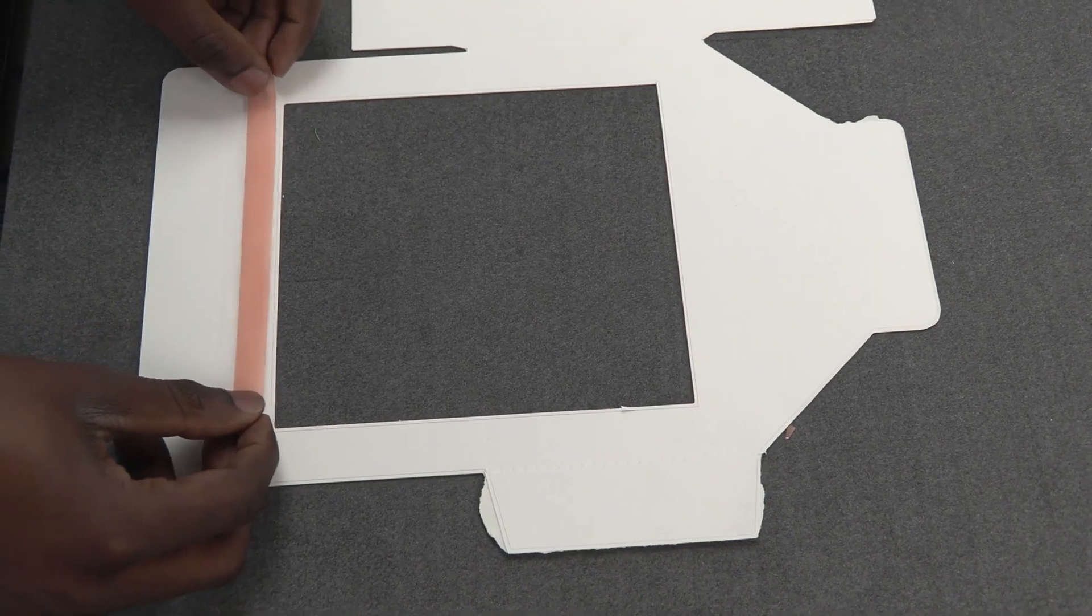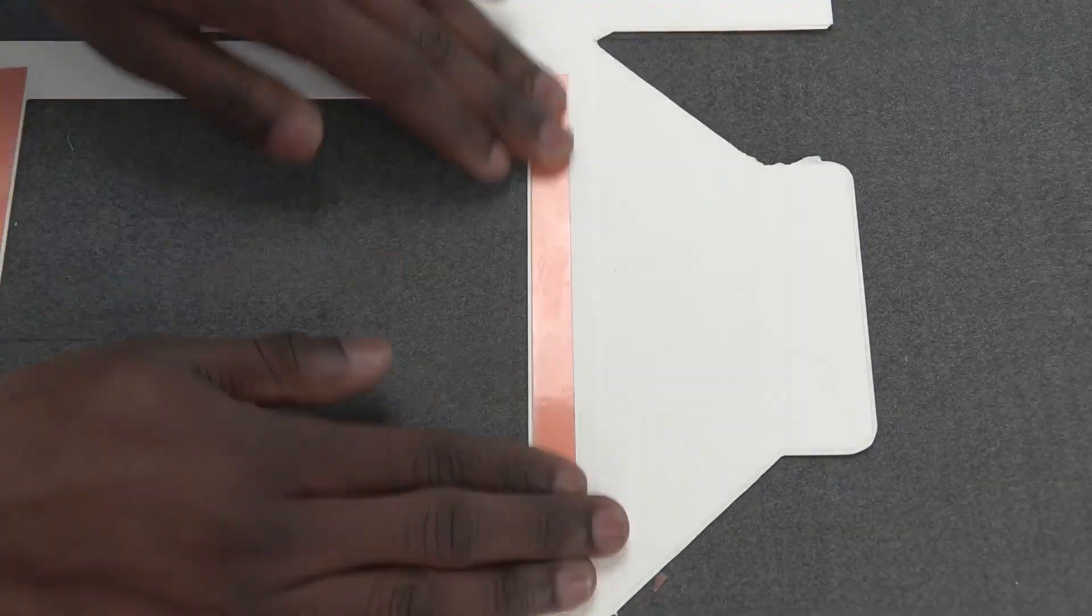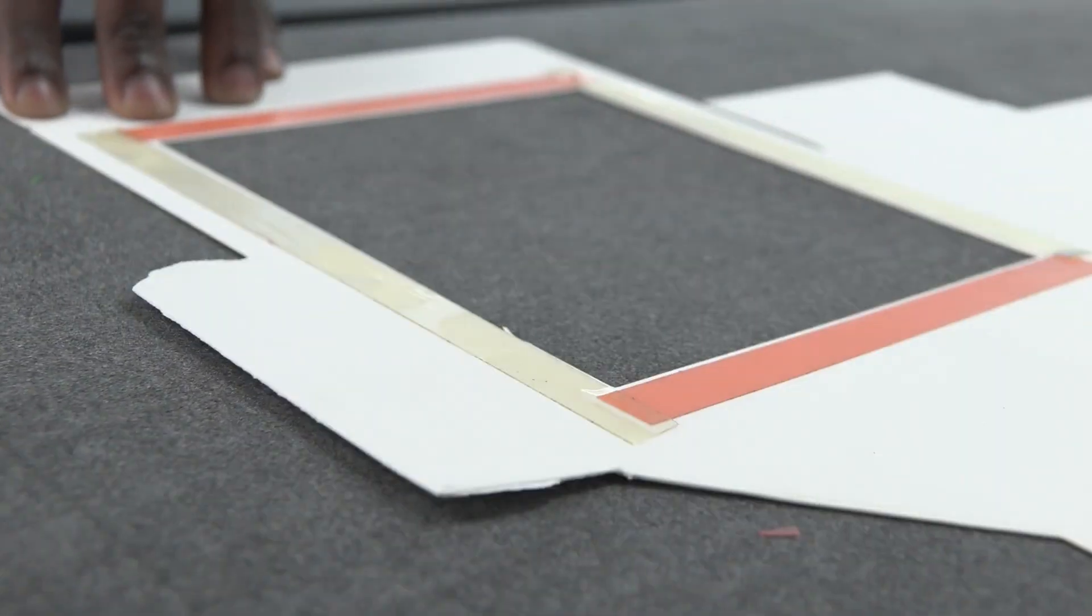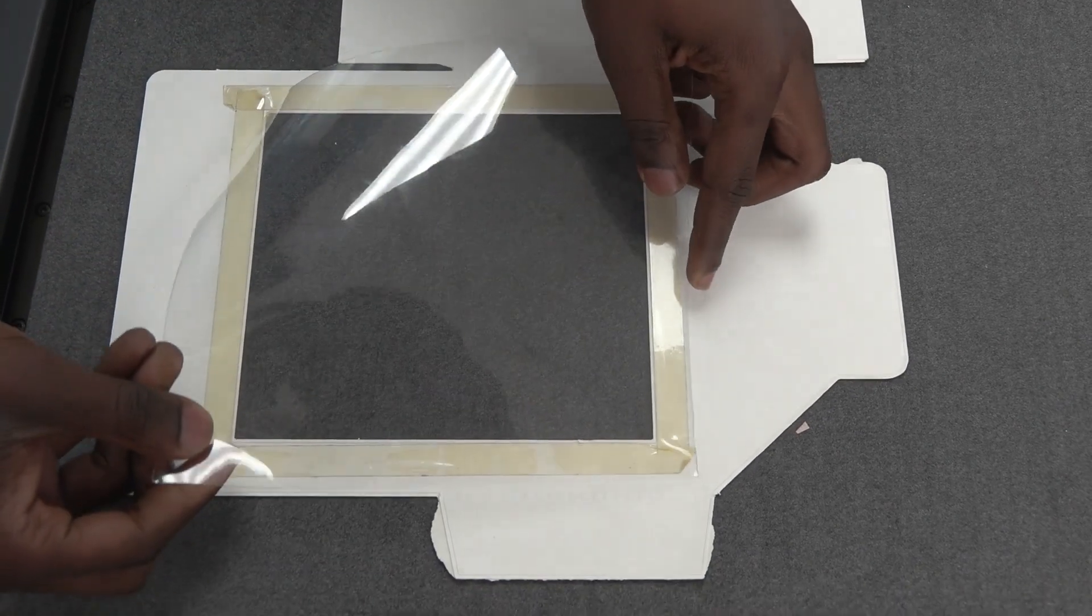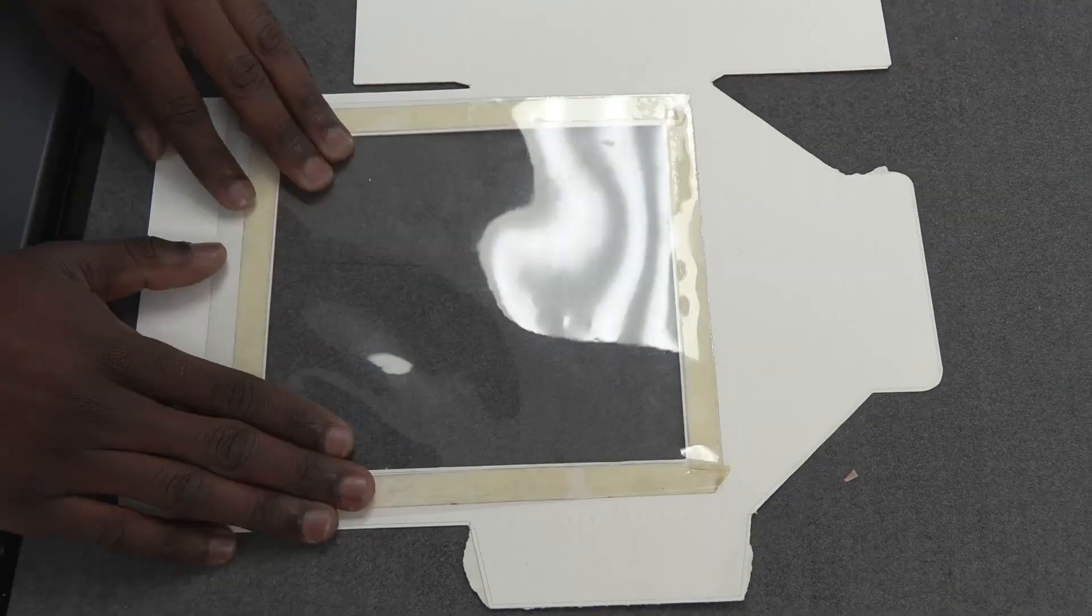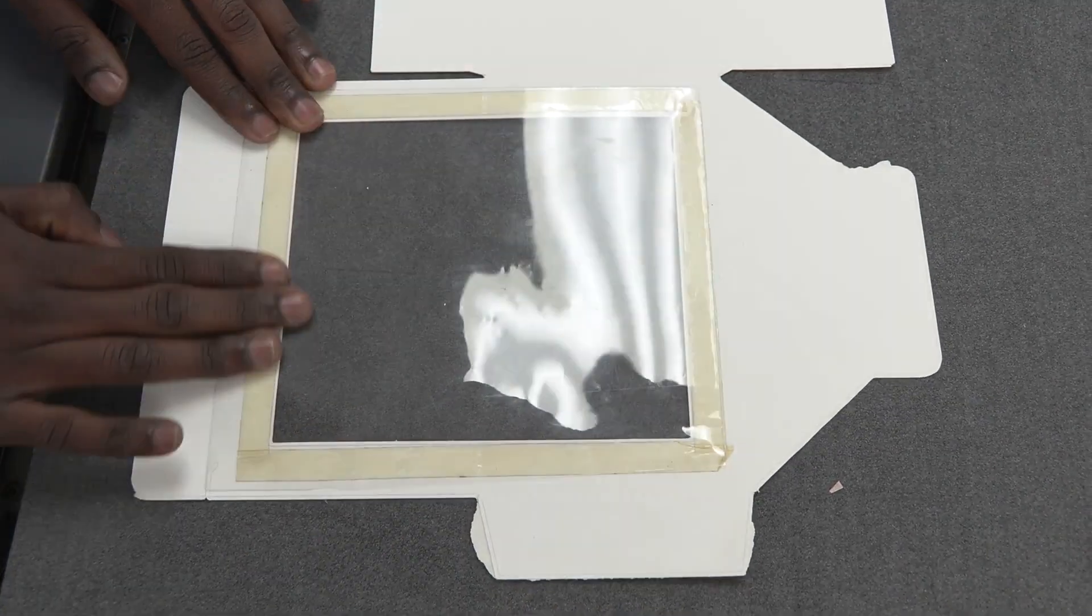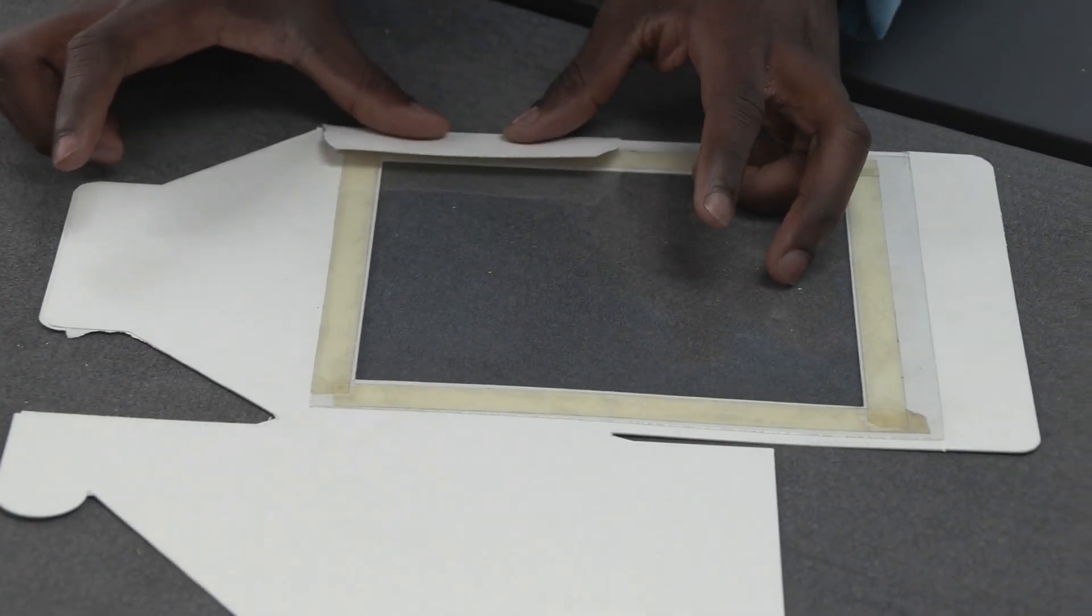Now that it's all cut out, we use double-sided tape on the edges of the window section over here, and then pop the transparency onto it. After that, we assemble the box.